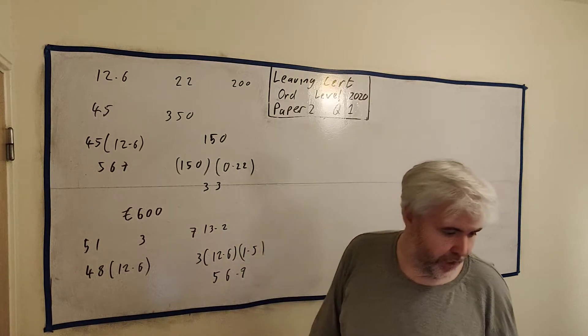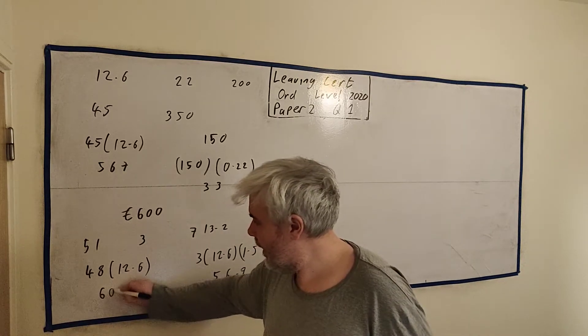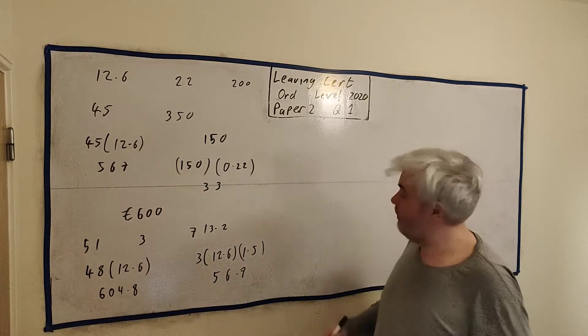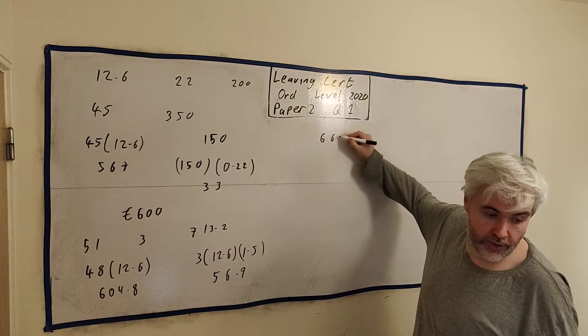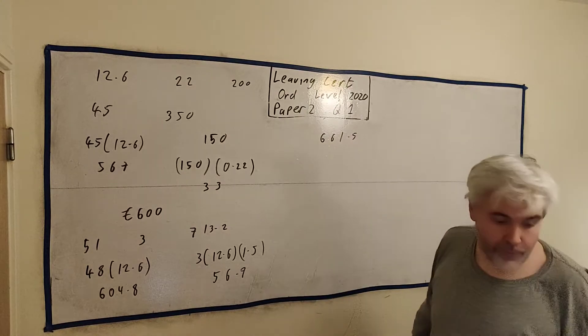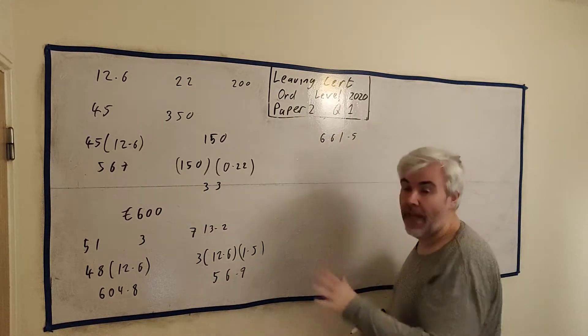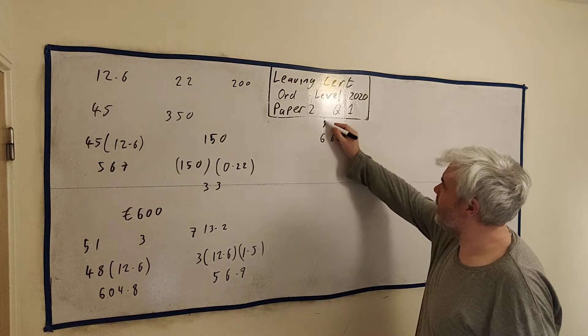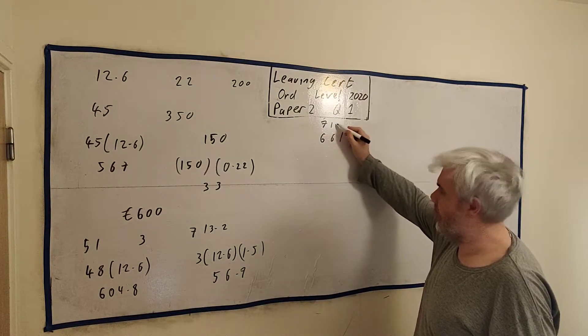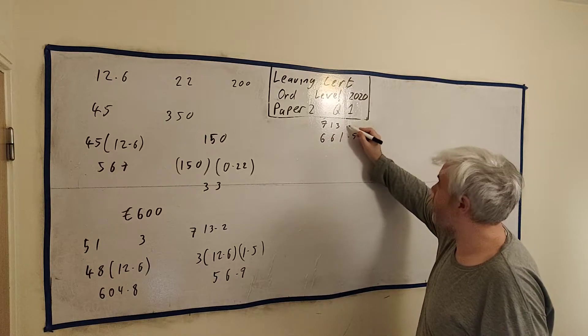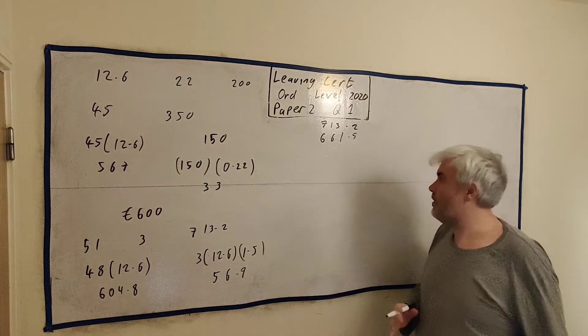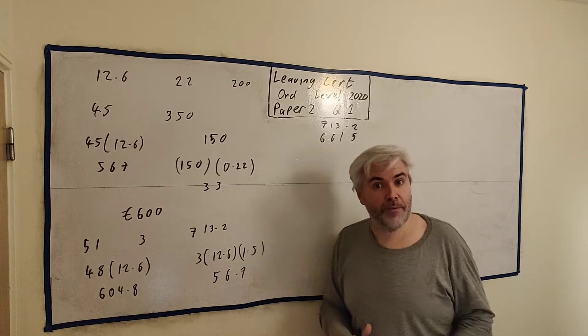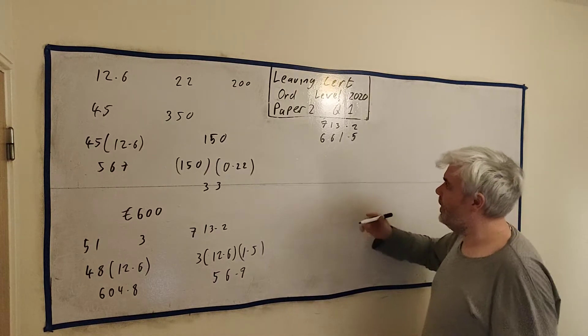And the 48 hours gives us €604.80. And if we add them together, we'll get €661.70. That's how much money he got paid from his wages that week. But they already told us that he got €713.20 gross wage that week. So where did the extra money come from? It must have come from his commissions.